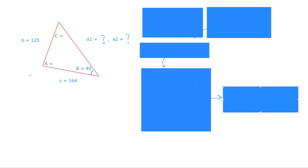The question asks, solve triangle ABC. I've drawn that in here and we're told that the side length B is 125, side length C is 164, A is unknown. We're told that angle B is 40 degrees but both other angles are unknown.